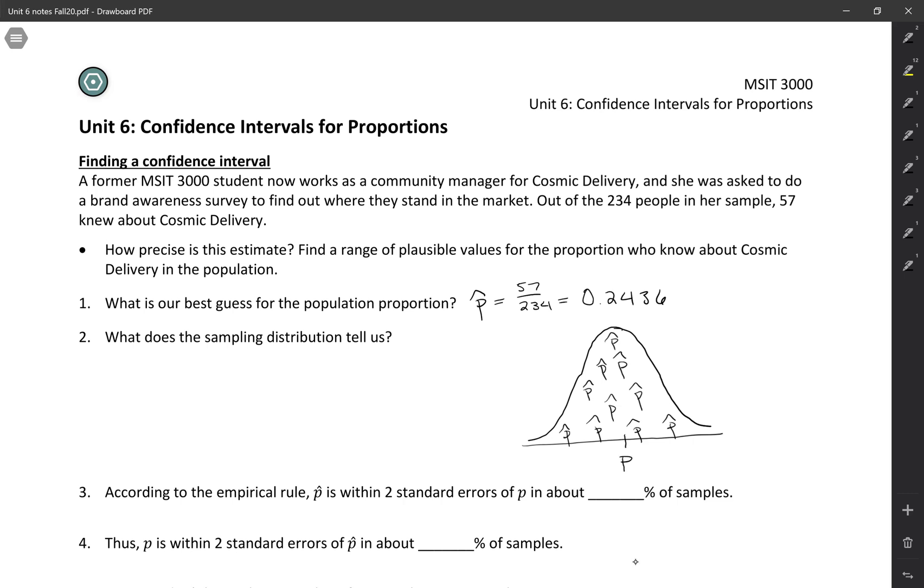So what does the sampling distribution tell us? It tells us how close we expect our estimate, how close we expect our estimate, which is p hat, the sample proportion, how close we expect the sample proportion to be to the true parameter. So how far is p hat from p?